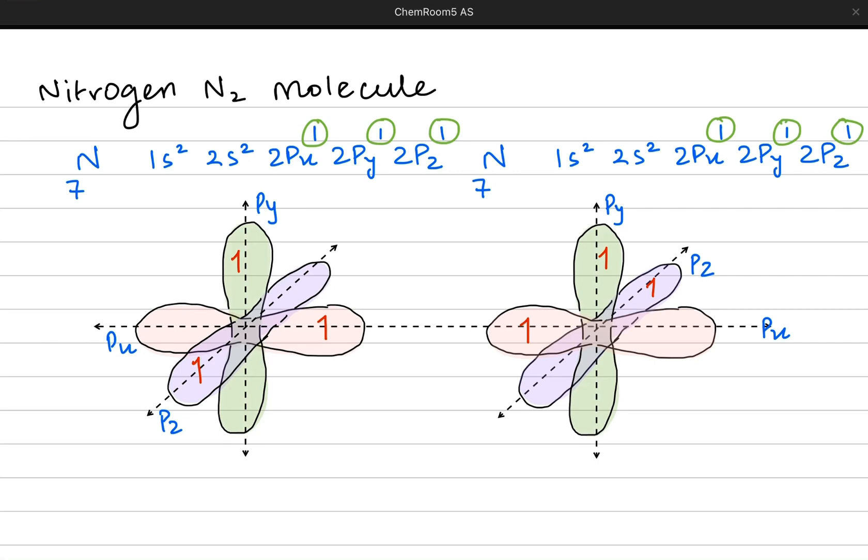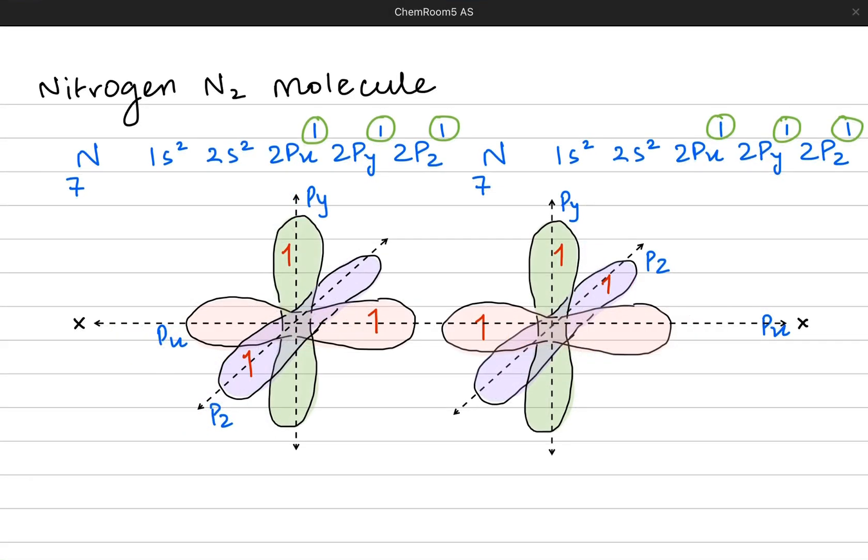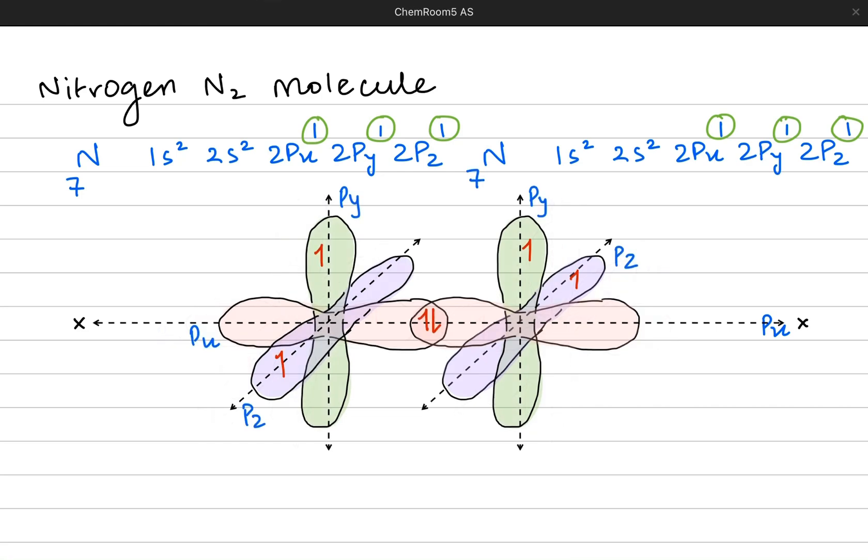But you can notice that it is possible only for the Px because they are right in front of each other, where they can come closer and bump into each other to create a sigma bond by the head-on overlap. This way the sigma bond is formed.